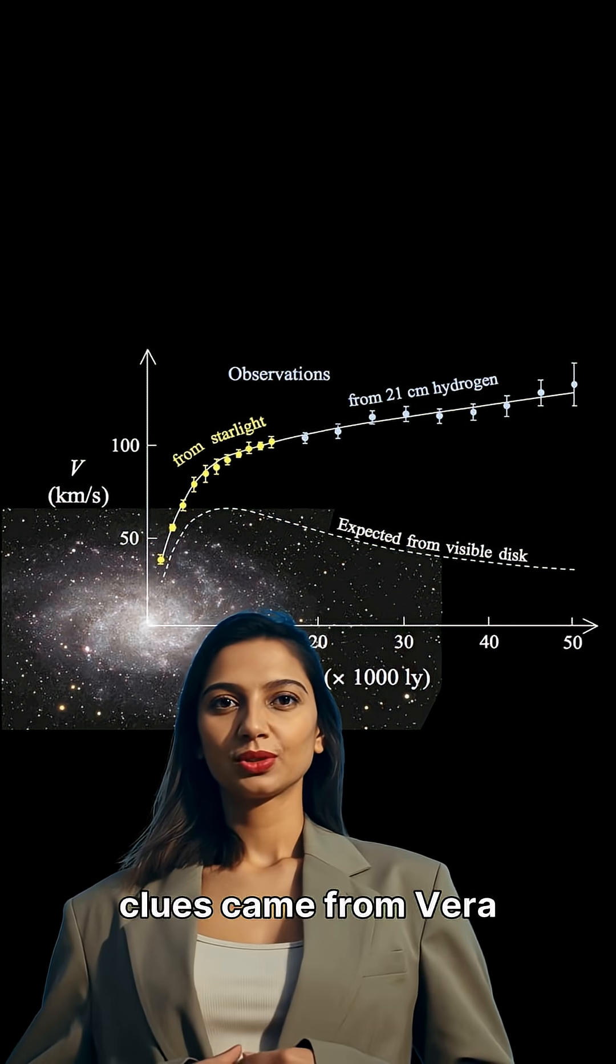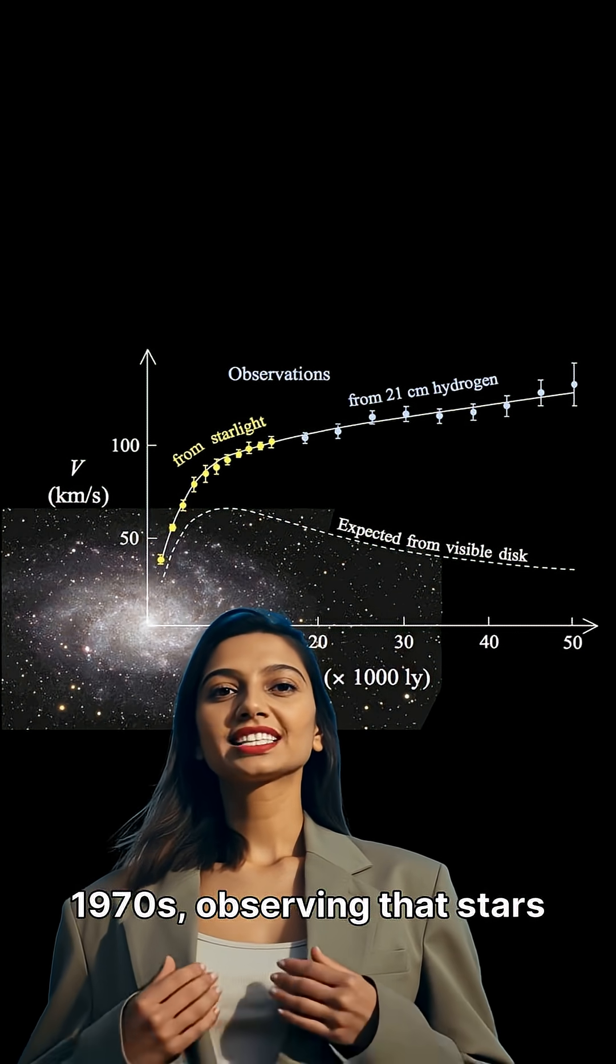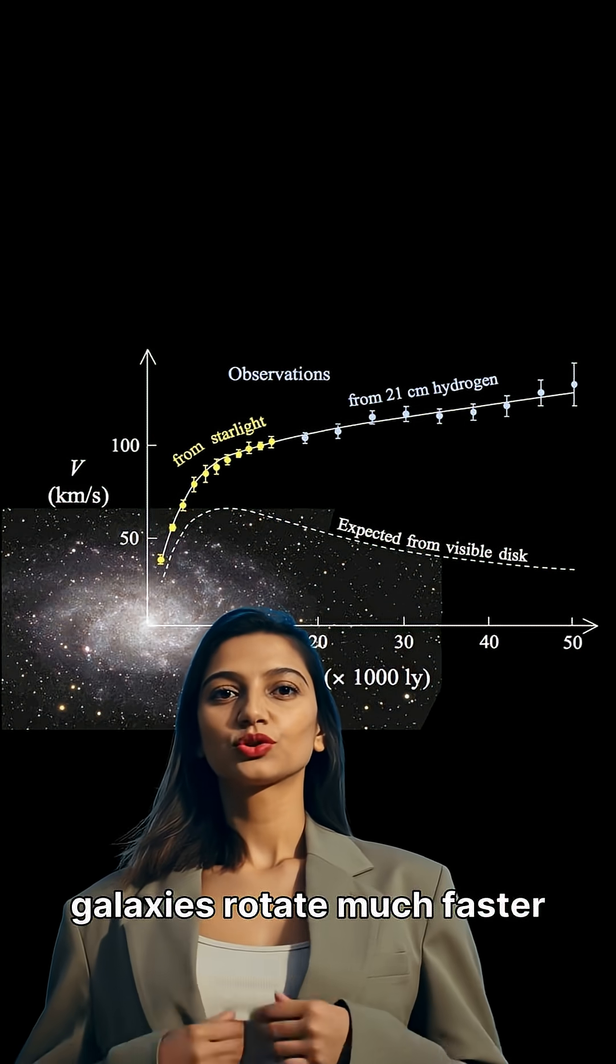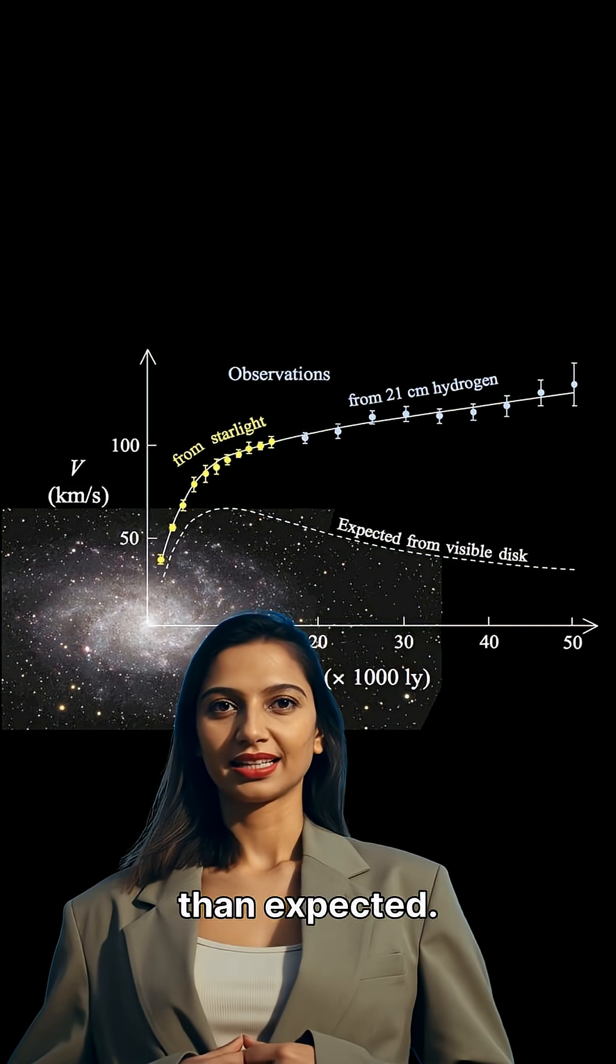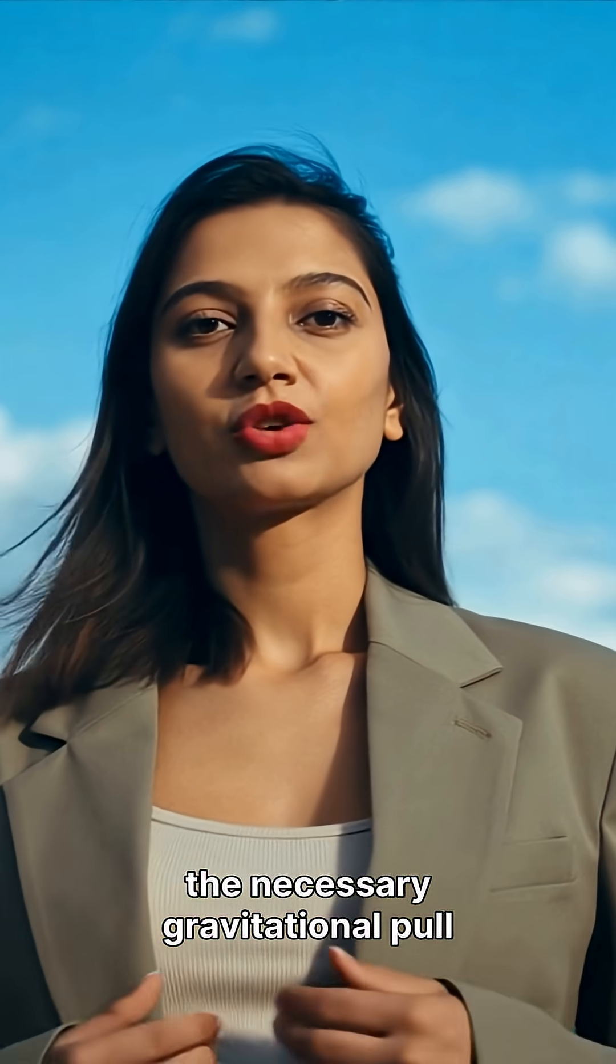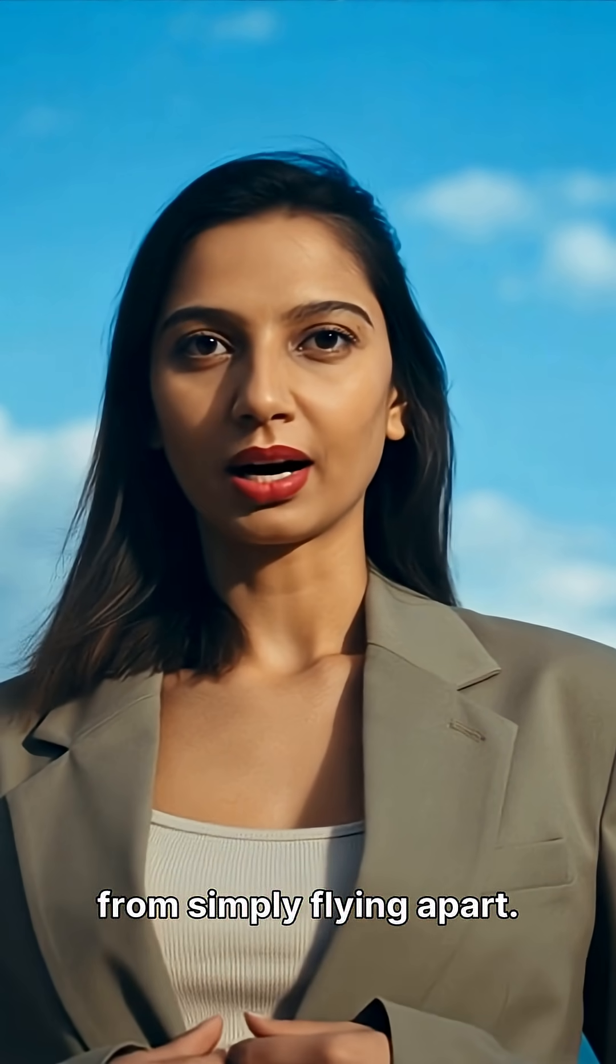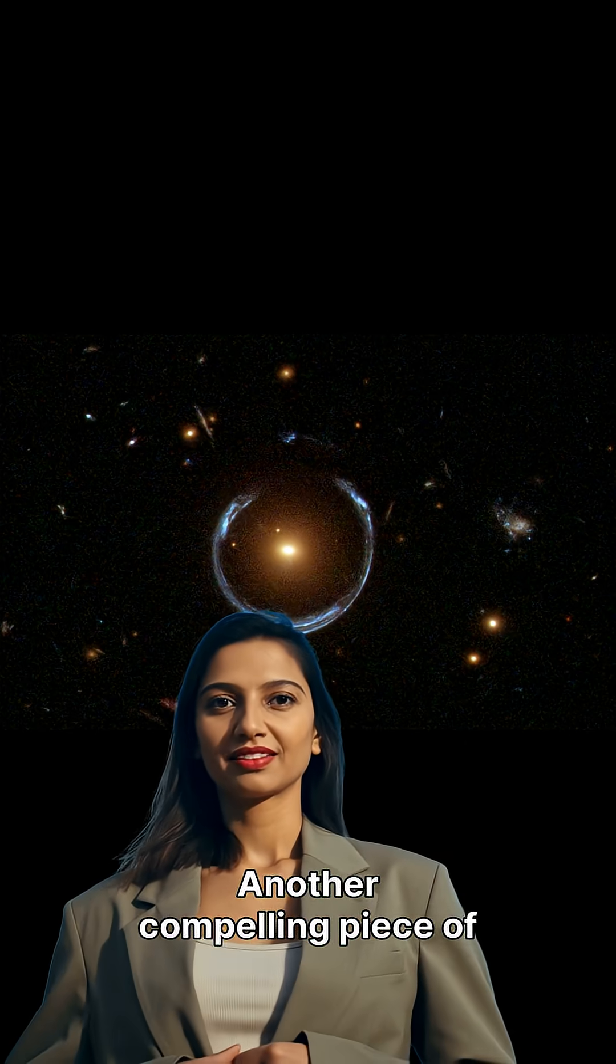One of the first clues came from Vera Rubin's work in the 1970s, observing that stars at the edges of galaxies rotate much faster than expected. This suggested an additional, unseen mass was providing the necessary gravitational pull to prevent these galaxies from simply flying apart.